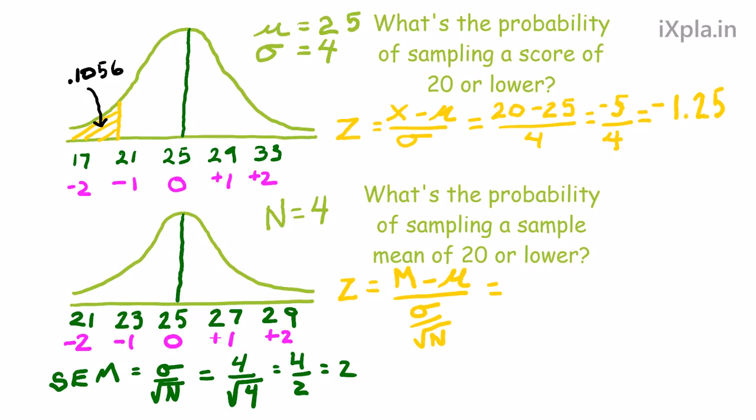Now we're going to use this equation. Again, because we're using a sample mean, not an individual score. We substitute in the numbers that we have, and then we run through the numbers, and we find a z-score of negative 2.5.